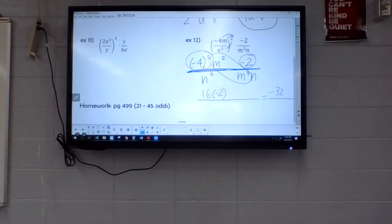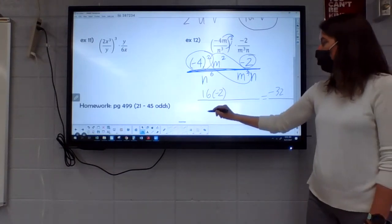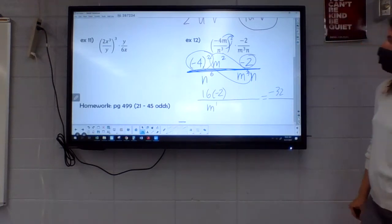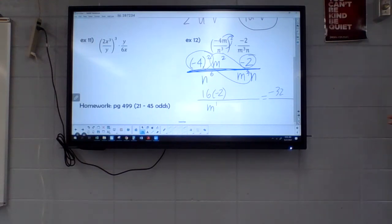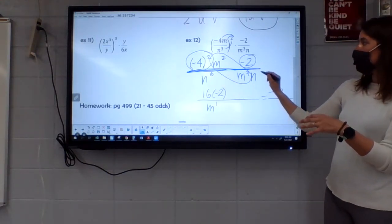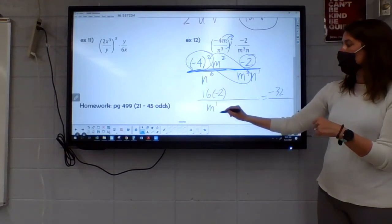Where are there more m's? Bottom. How many more? One. And then the n's are on the bottom. So I'm gonna put those together. How many are there gonna be? Six and one. Seven.